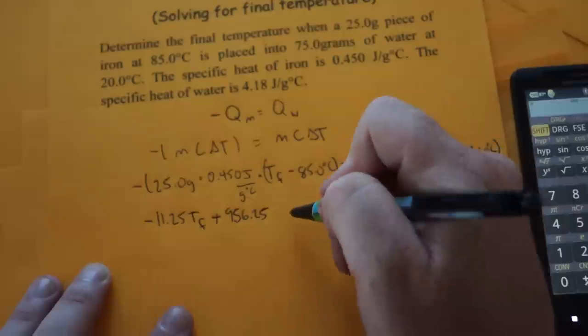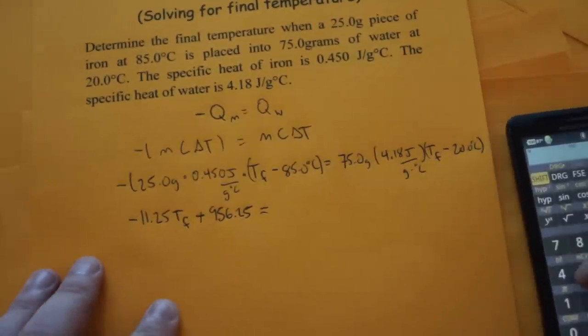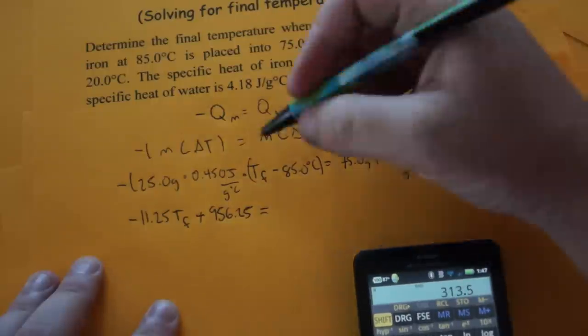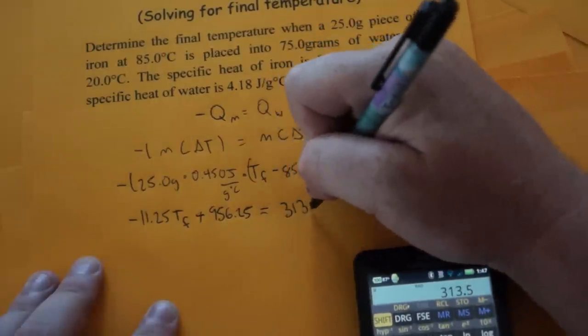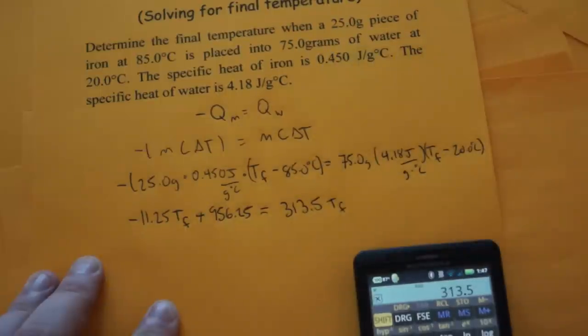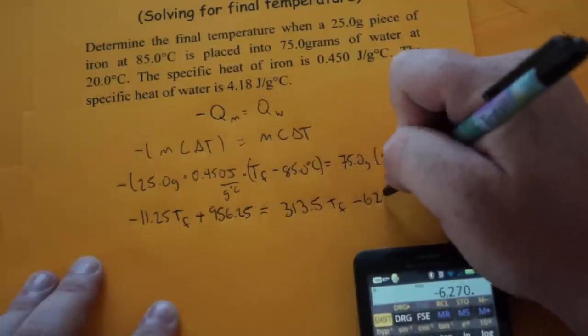So that's the one side after we distribute all the numbers. Now for the other side, 75 times 4.18 equals 313.5 Tf. And then we just multiply it by the 20, but that's negative. And that comes out to negative 6,270.